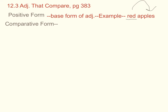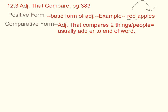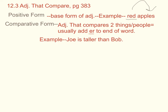Comparative form: adjectives that compare two things or two people. Usually add -er to the end of the word. Example: Joe is taller than Bob. Two people are being compared, Joe and Bob, with the adjective taller.